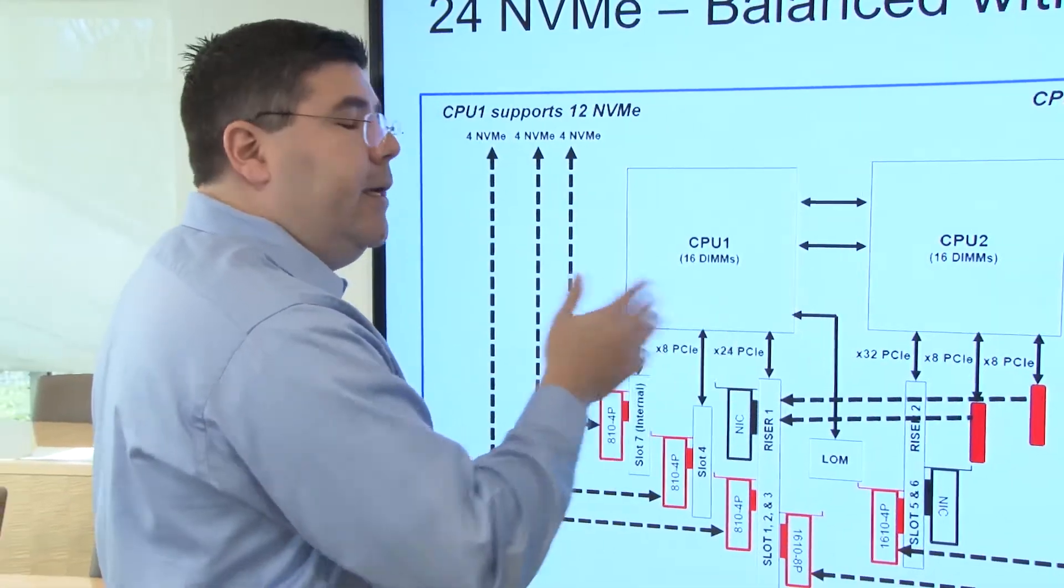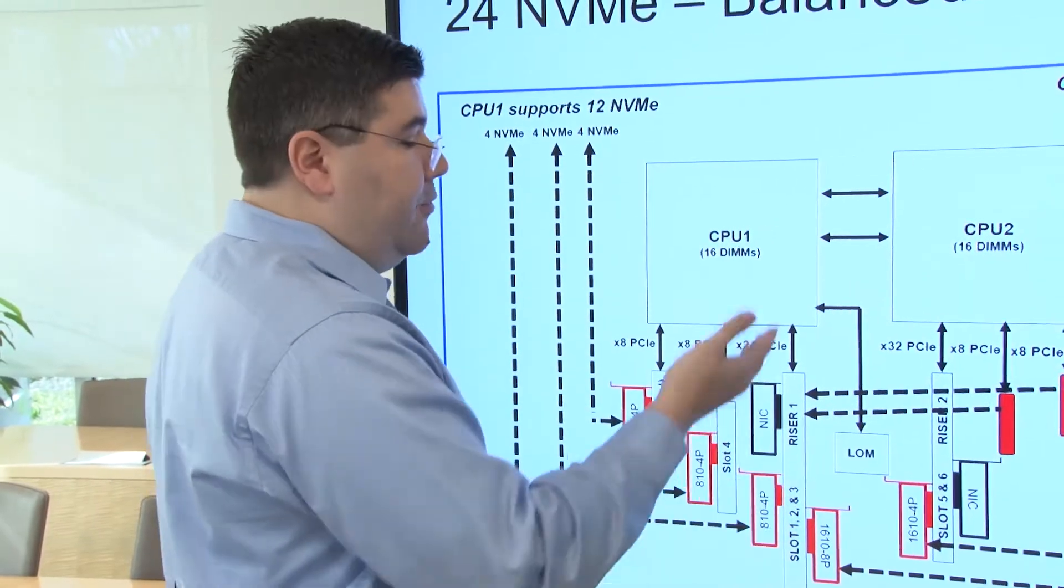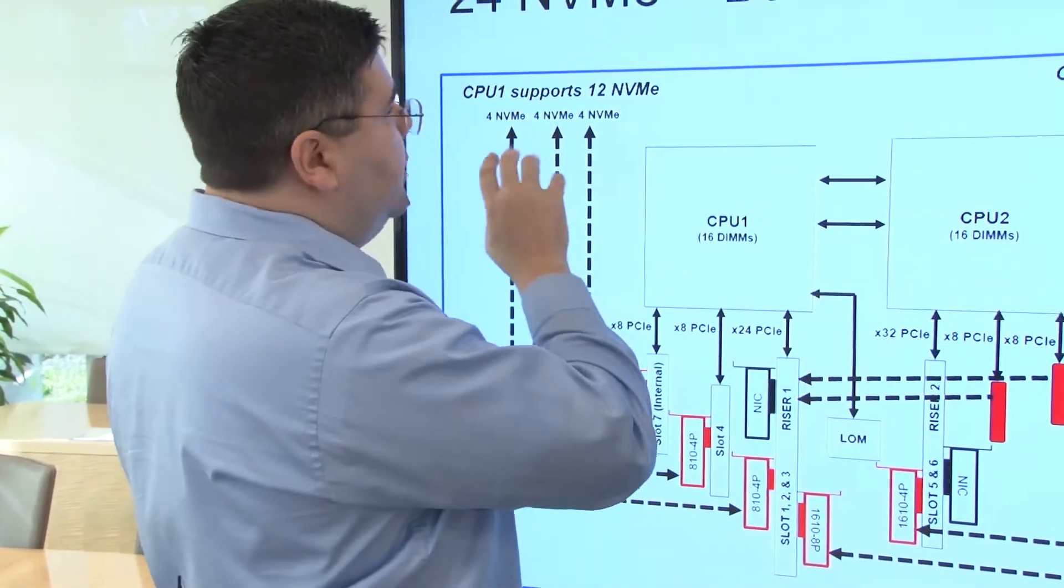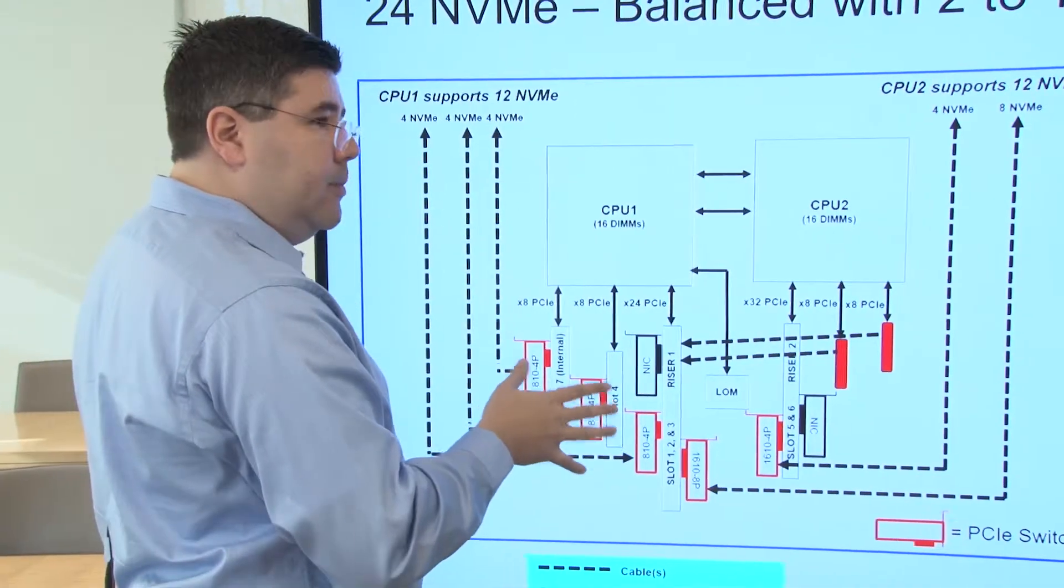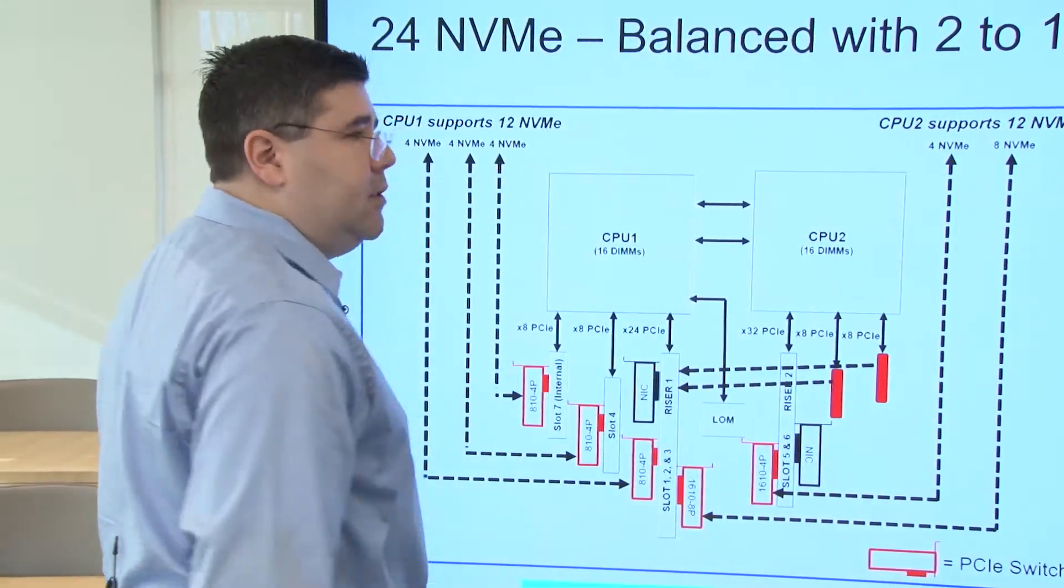We absolutely want to minimize it because you want to maintain the highest amount of bandwidth that you can get from each of the drives. So our solution is a balanced solution, but it's also a two-to-one oversubscribed. So for every four lanes of PCI interconnect from one of the CPUs, two NVMe drives will be connected back to the four lanes. Hence, two-to-one. But that's a balanced, every one of the drives is balanced at that two-to-one oversubscription. And again, we've balanced 12 drives to CPU one and 12 drives to CPU two.